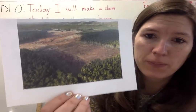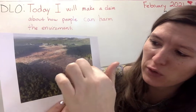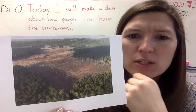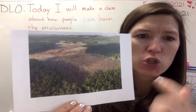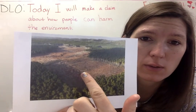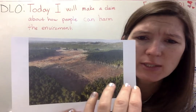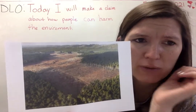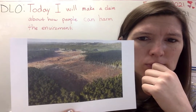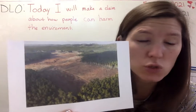Now look at this picture. There are all these trees in the forest and they've been cut down here for lumber. Think about what people did to change the environment here. They cut down a large part of the forest. How does cutting down trees harm the environment? Harm means hurt it a little bit. Well, when the trees are cut down, shelter and food for animals can be destroyed.